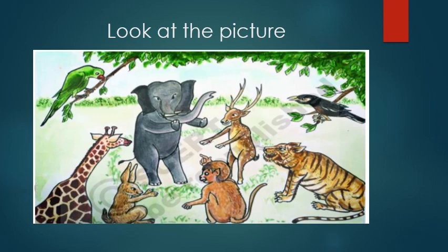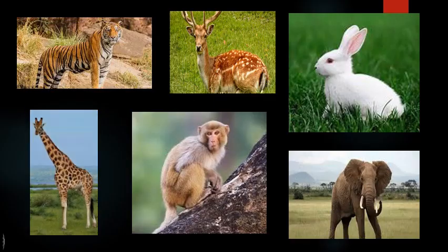Which animals do you find in the picture? The largest animal — elephant. Tallest animal — giraffe. A small animal — rabbit. Monkey. Furious tiger. And also deer. You can see even birds also.